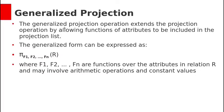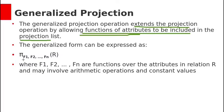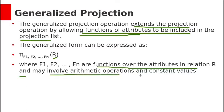One is the generalized projection. Generalized projection operation extends the projection operation by allowing functions of attributes to be included in the projection list. In normal projection, you select some attributes from the relation R. In generalized projection, you can include some mathematical functions. F1, F2 are functions over the attributes in relation R, and may involve arithmetic operations and constant values.